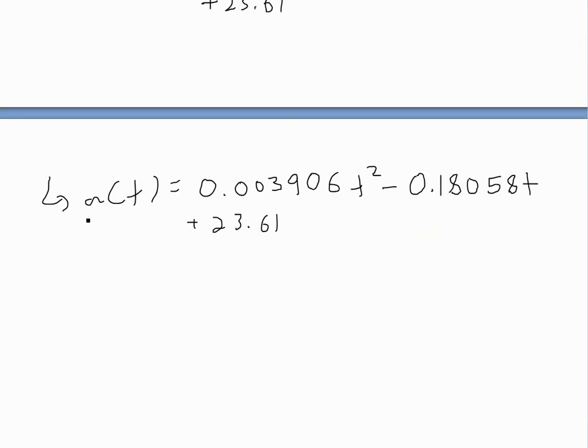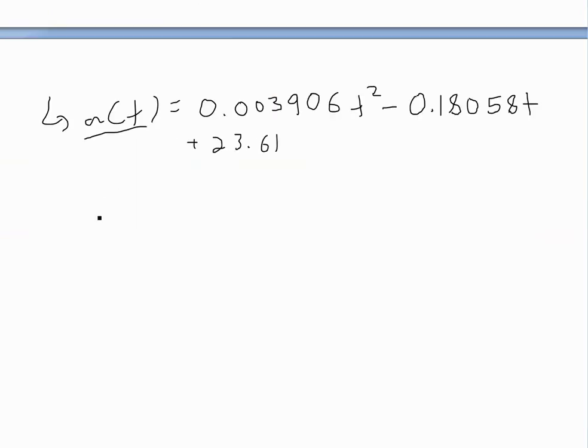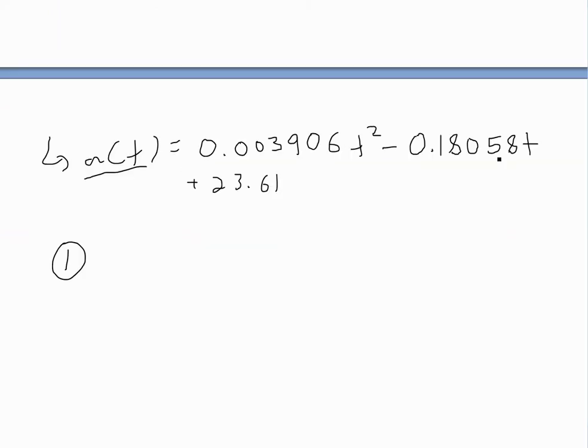closed interval method to find out what the maximum accelerations are during that interval of 0 to 126 seconds. We can do that by following the steps. Step one is finding the critical numbers. This is a continuous function and a polynomial, so the derivative is going to exist at all points. You